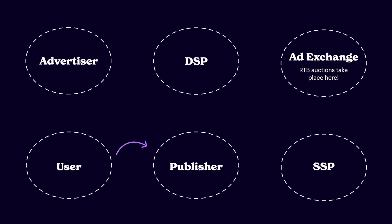Between these two there is an ad exchange that matches the requirements of both sides. The moment a user visits a website, they are scanned for their previous shopping habits, device they use, location, and so on. The information is then passed from an SSP to the ad exchange, and from the ad exchange to a DSP. The DSP sees the user data — called the bid request — analyzes it, and chooses the most suitable ad that meets both advertiser and publisher requirements.